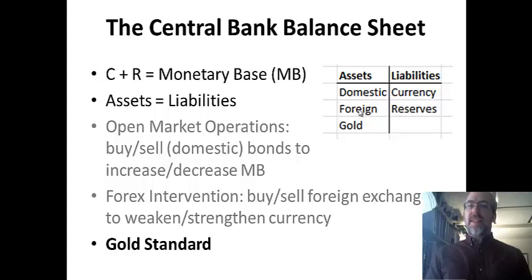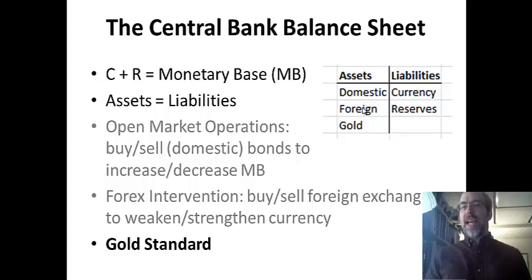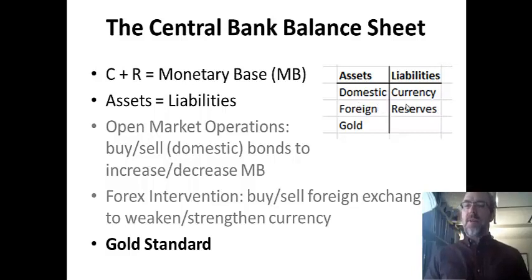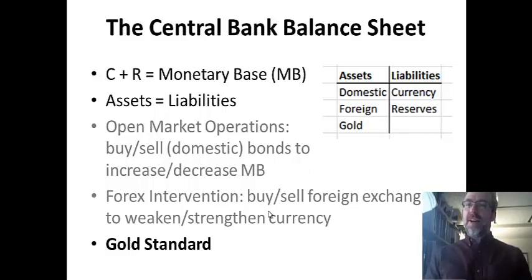Just to remember: assets equal liabilities — if one side increases, the other side increases as well. I talk elsewhere about how domestic asset purchases increase the money supply through open market operations. Foreign asset purchases can be used to weaken a currency. And under the gold standard, gold purchases or gold acquisition also increase the money supply.